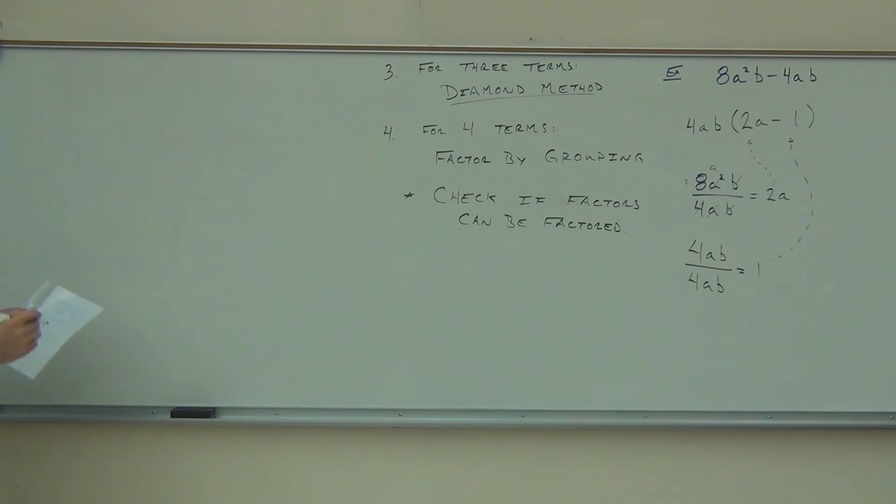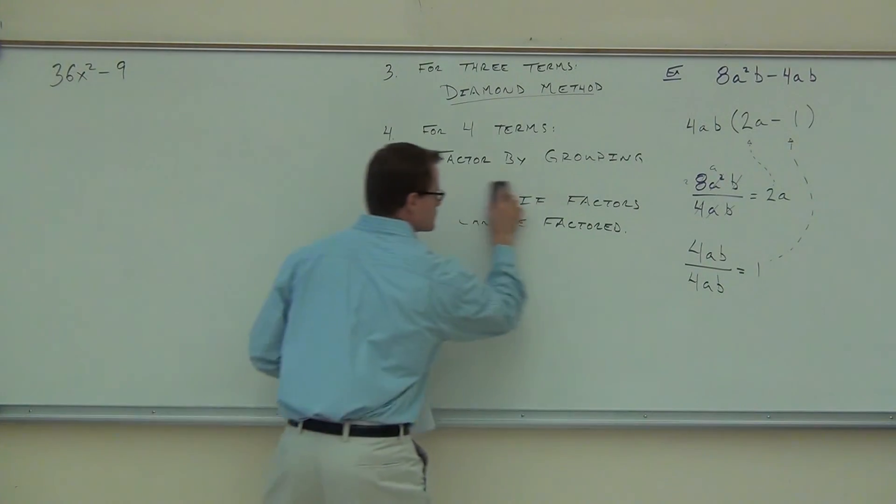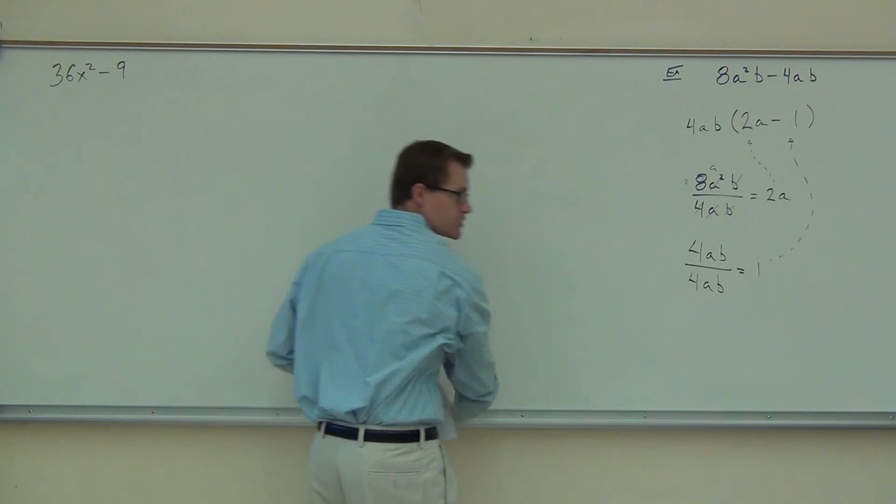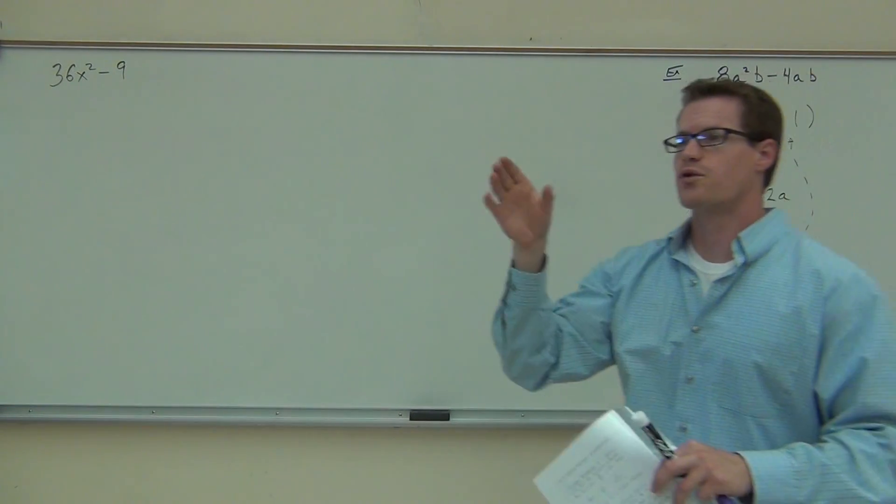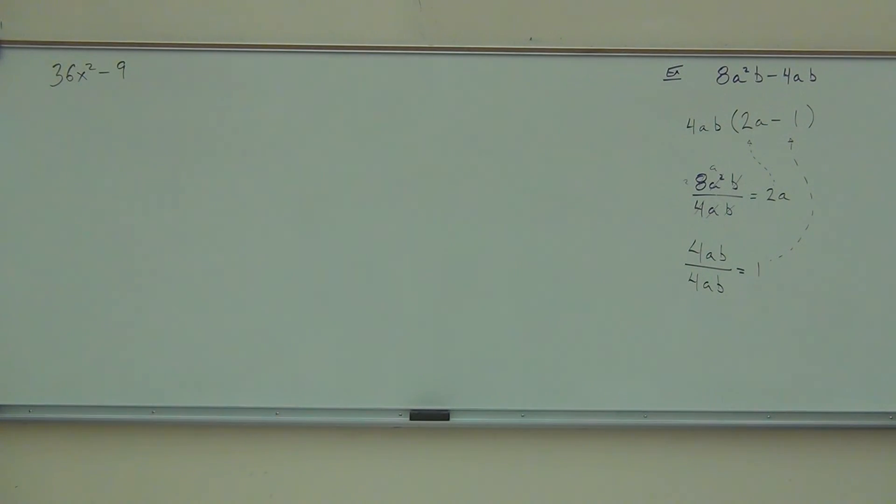Let's move on to another one. Let's say we have something like this, 36x squared minus 9. Tell me, folks, what is the first thing that you're going to do? Are you going to start counting the number of terms first? No. You're going to look for what first? Everybody, what are you going to look for first? The greatest common factor. Please look for that. Look for the greatest common factor first. Do this on your own right now. We just practiced that. What I want you to do right now, find the greatest common factor and factor out. You don't have to say it out loud. Just do it on your own right now.